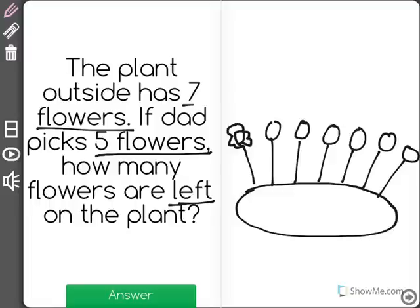Now what happens is dad comes out and he picks five. Now when you pick a flower, the flower goes away.